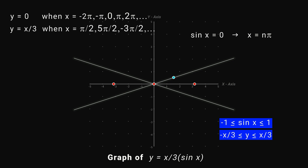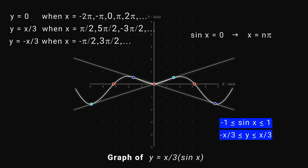And y equals x/3 when x equals π/2, 5π/2, and so on. And y equals minus x/3 when x equals minus π/2, 3π/2, and so on. So the graph of this function looks like this.